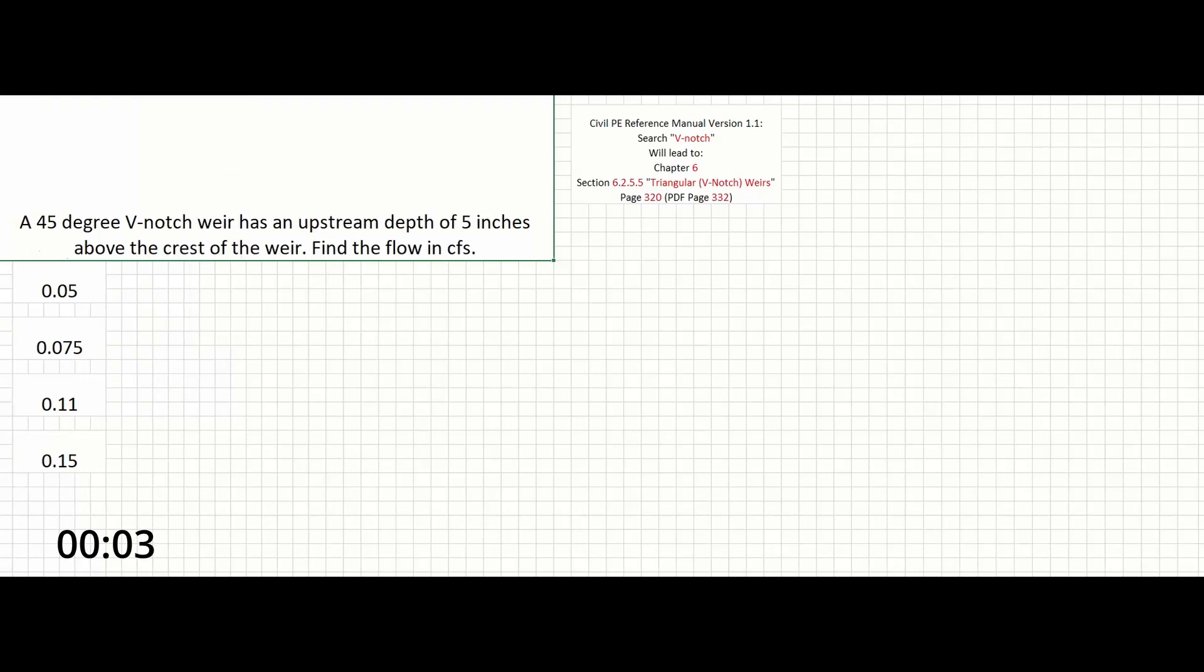Okay, in this problem a 45 degree V-notch weir has an upstream depth of 5 inches above the crest of the weir. Find the flow in CFS. So there's not a lot of information in this problem which is good for us because that means there's not a lot we're going to have to solve for probably.